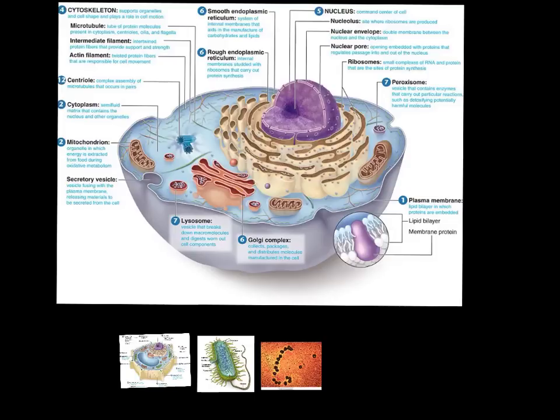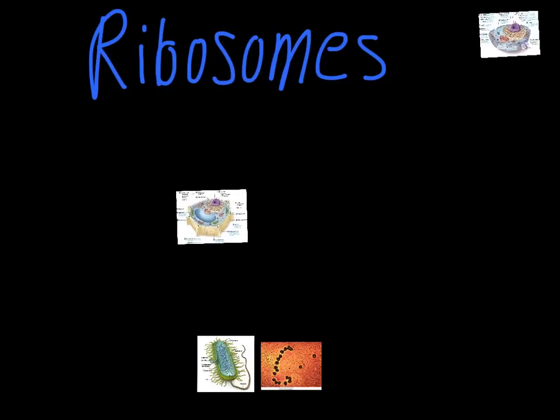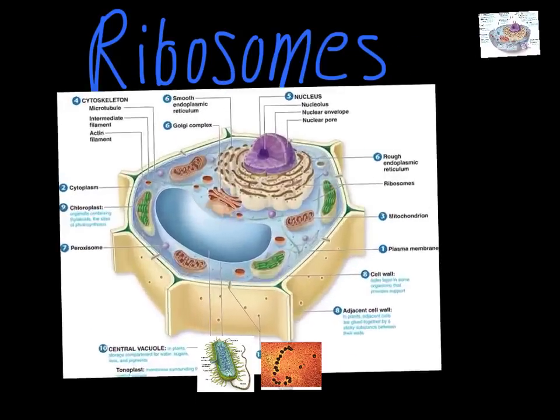Ribosomes are found in two locations in animal cells. They're found attached to the endoplasmic reticulum, as shown here. And then these little dots out in the cell — those are ribosomes as well. Some of them are free-floating.